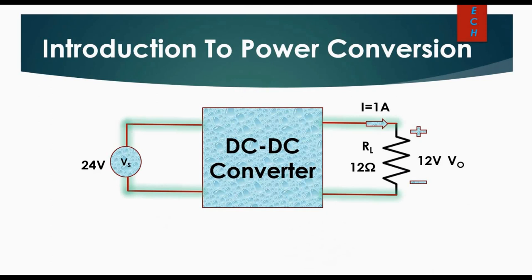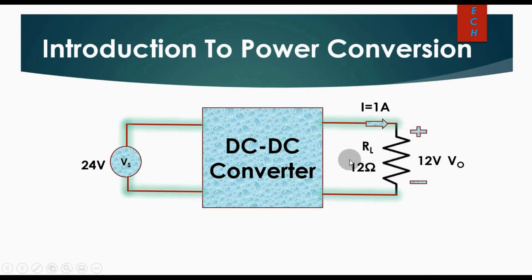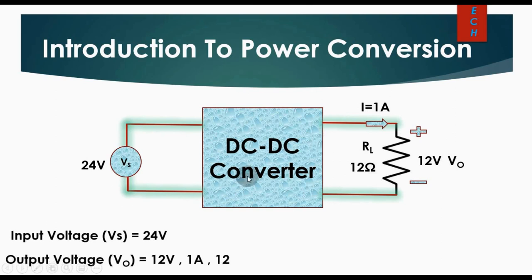So this is your basic block diagram. We have a DC-DC converter here with an input source voltage Vs equal to 24 volt. The load voltage V_out is equal to 12 volt, the load resistance is 12 ohm, and the load current is 1 ampere. So the output voltage is 12 volt, output current is 1 ampere, and load resistance is 12 ohm — this is the requirement we have.